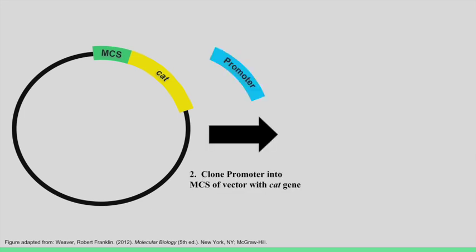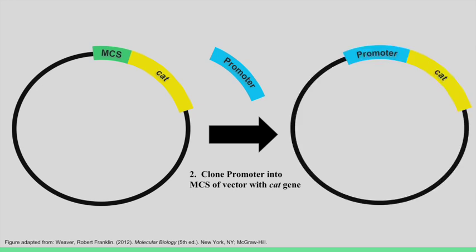Next, we will clone this promoter into the multiple cloning site of a vector upstream of the CAT gene. As a result, the CAT gene will now be under the control of GeneX's promoter.